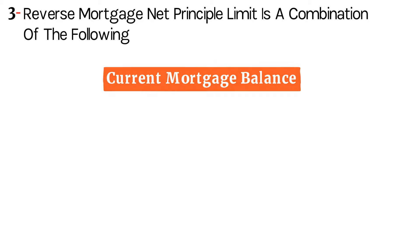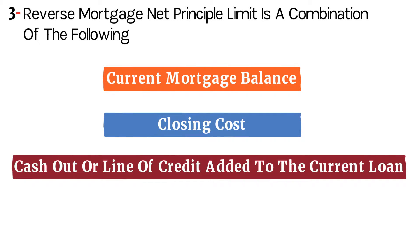Reverse mortgage net principal limit is a combination of the following: current mortgage balance, closing cost, cash out or line of credit added to the current loan.